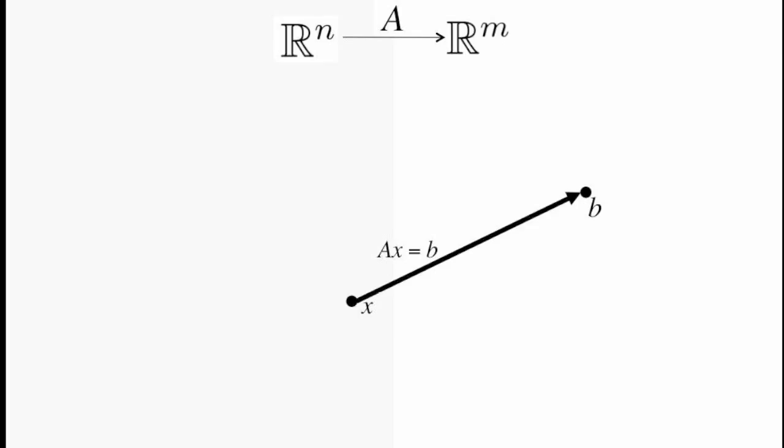The other thing you know is that b must be in the column space of A, because the column space of A is the set of all linear combinations of the columns of A, and A times x takes a linear combination of the columns of A.